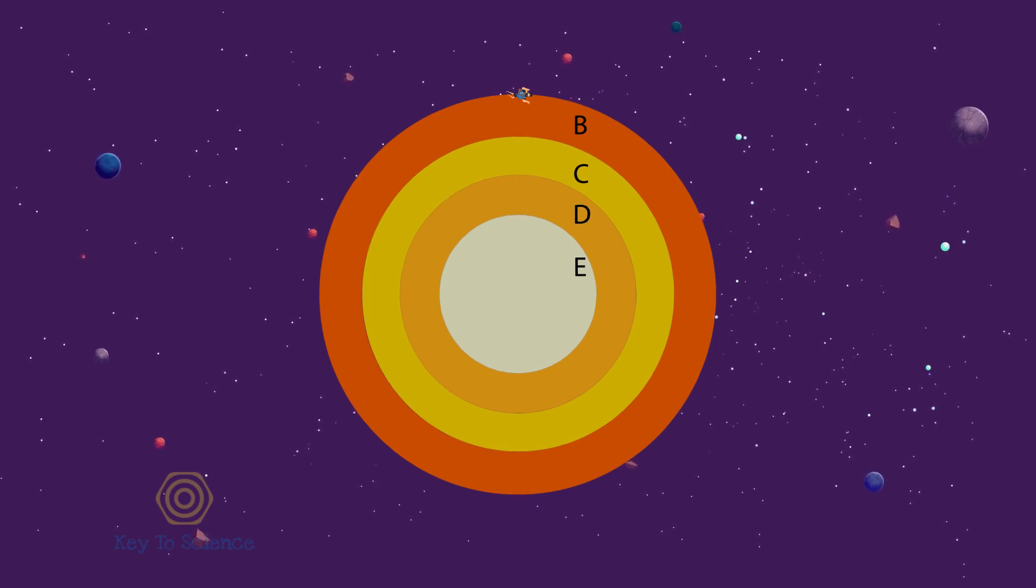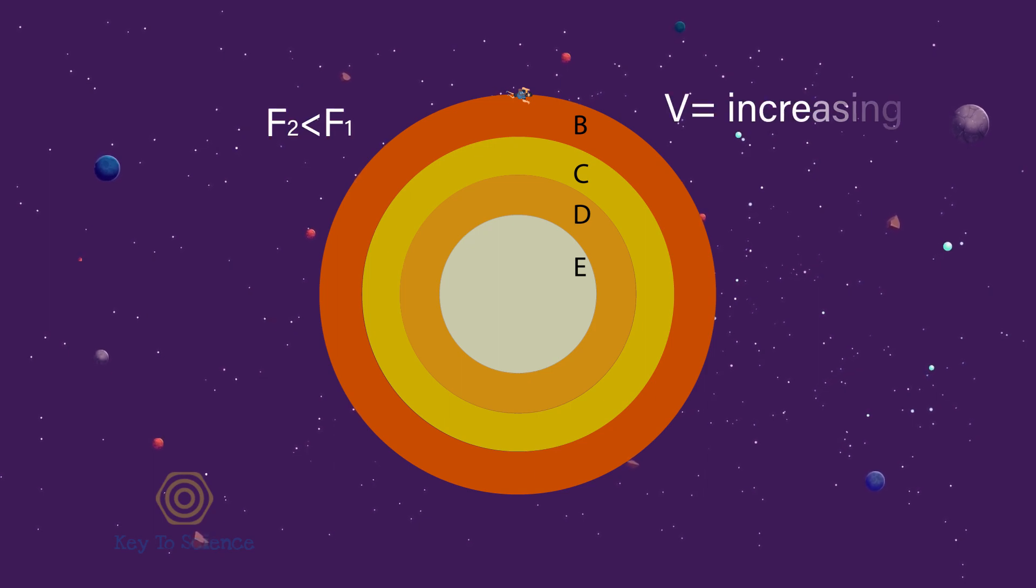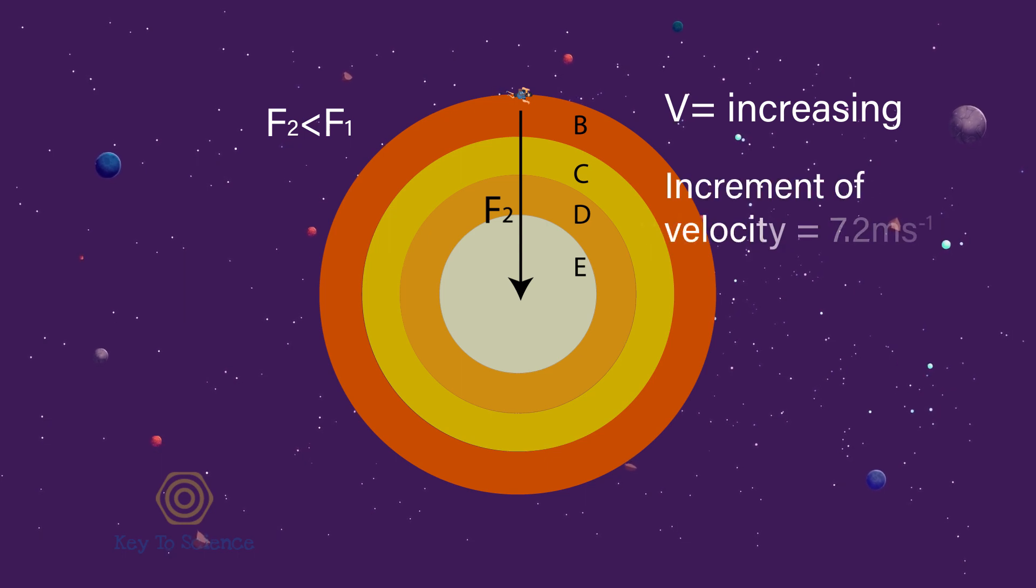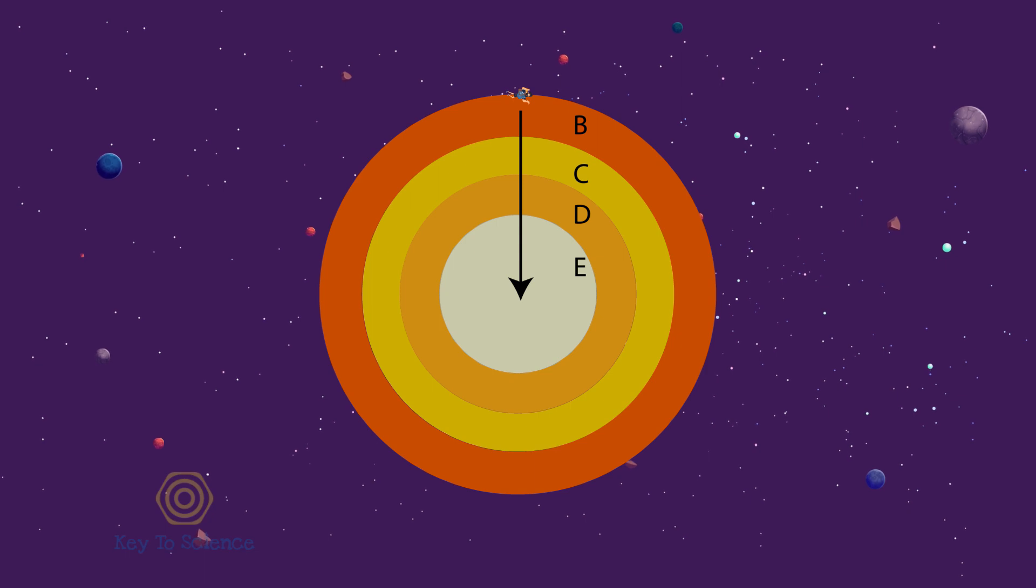At this point, though the value of force has decreased, the velocity will still be increasing, as force F-2 is still acting on us. The increment of velocity will be smaller than before. Let's assume the velocity is still increasing at a rate of 7.2 meters per second. Let's get deeper.